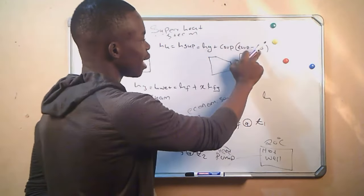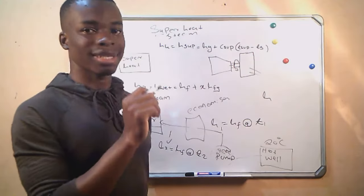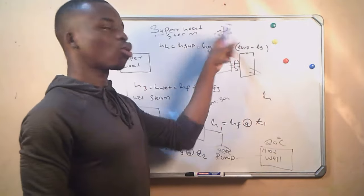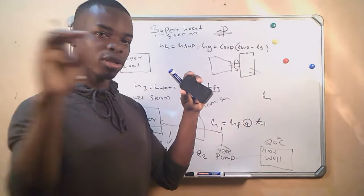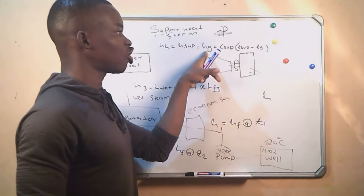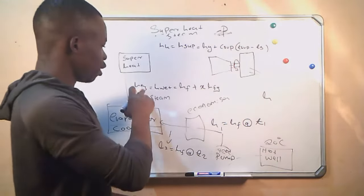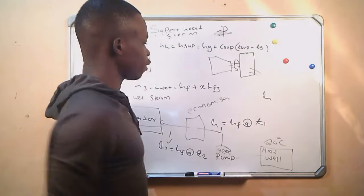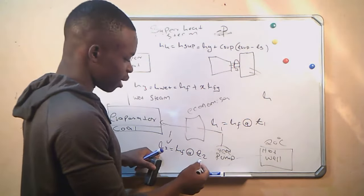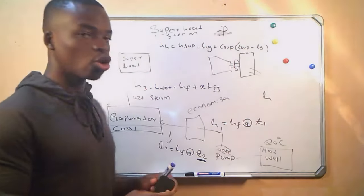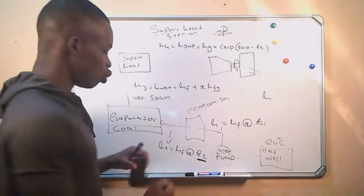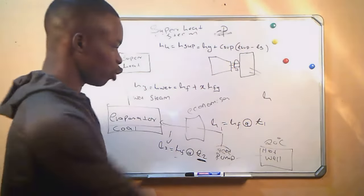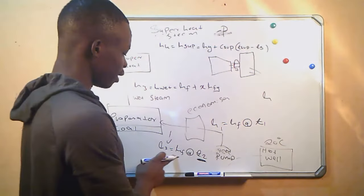HG and H-SUP you are going to get from the steam table. You will be given a certain pressure — you go to the steam table, look for that pressure, and in the corresponding row you take the value of HG and the saturation temperature. You will also use a pressure to get the value of HG and HFG. For H1 and H2, you will be given the temperature, go to the steam table, look for that temperature, and extract the value of HF from that row.